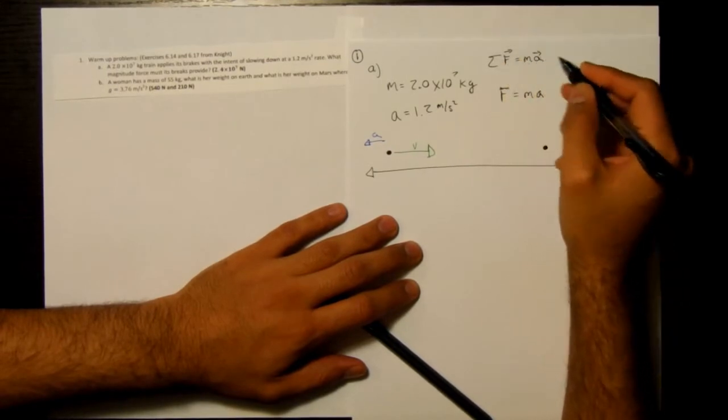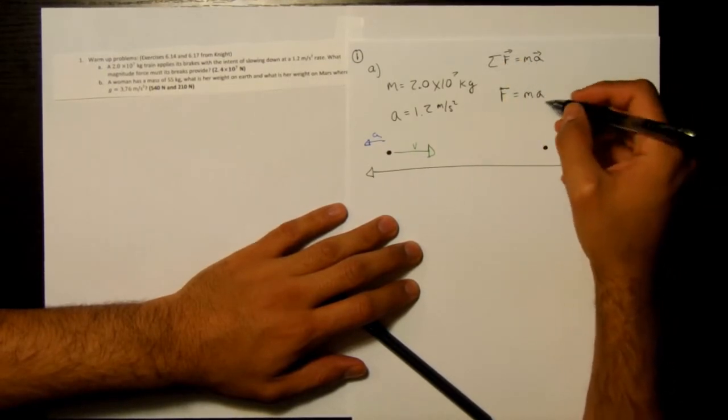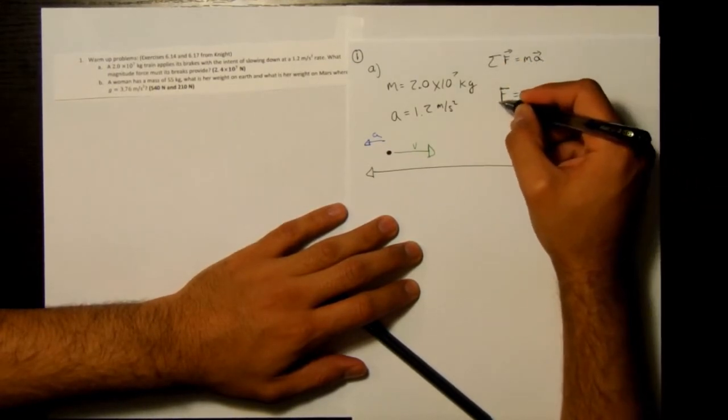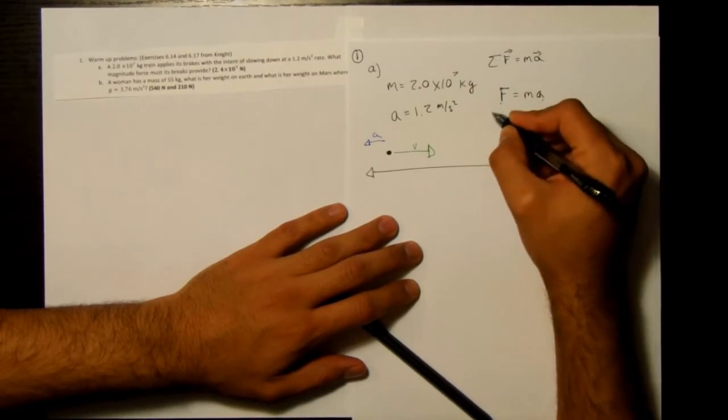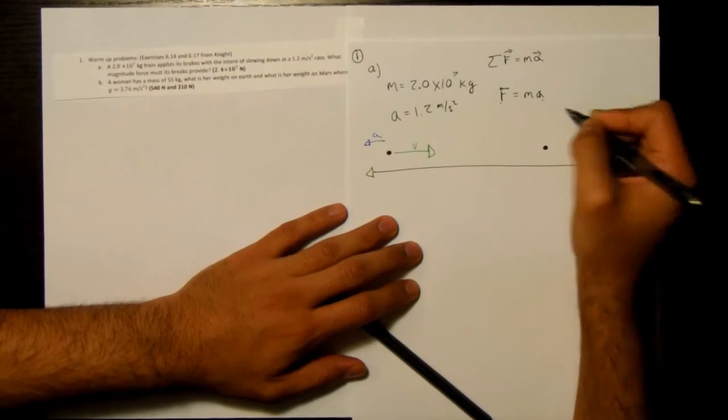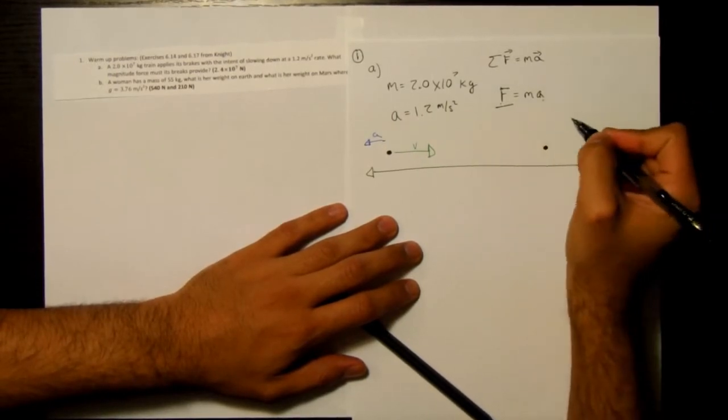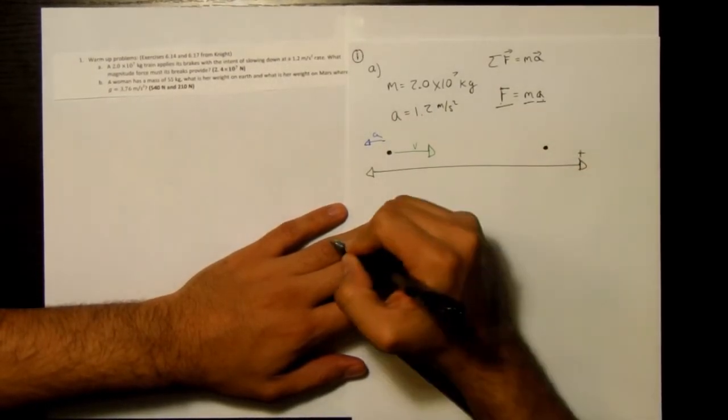From this equation, we're going to get that the magnitudes are related by this equation. Remember, this is a vector equation, but over here we're just talking about the magnitudes. And so the magnitude of the acceleration and the magnitude of the force that causes that acceleration, they're related by the mass.